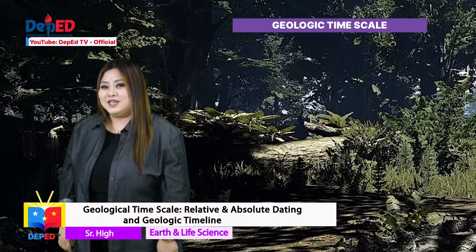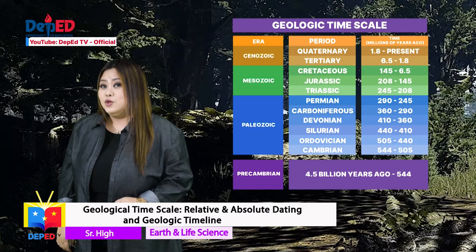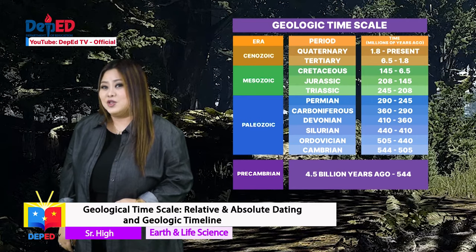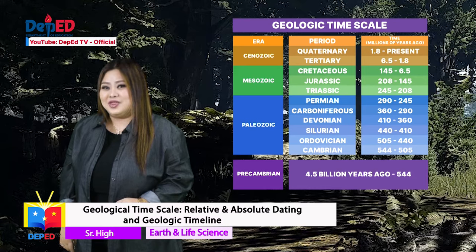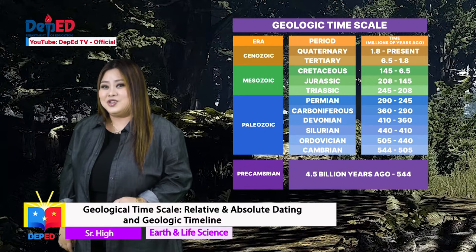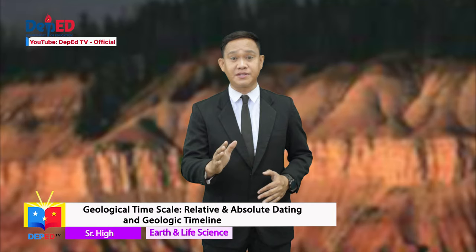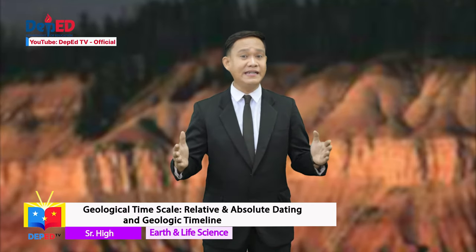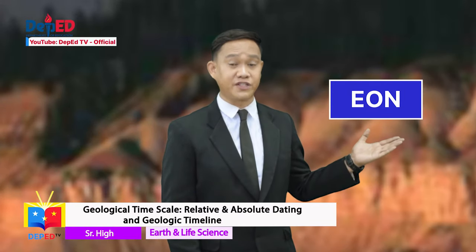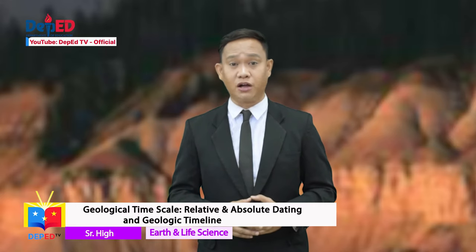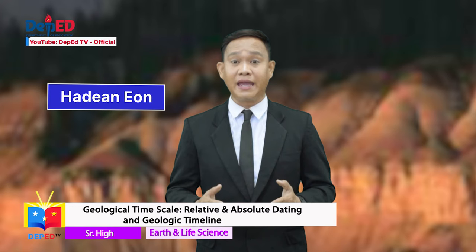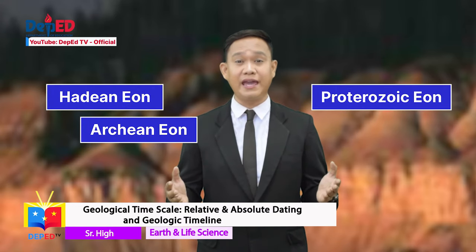The geologic timescale is divided into a series of time intervals. These timing intervals are different from that of a clock. They are divided according to the significant events in the history of the Earth, such as the mass extinction of a large population of fauna and flora. The table represents the division of geologic time in Earth's history separated into eons, periods, and epochs. The Earth's age, which is 4.6 billion years, is separated into different spans of time. Eons are the largest slices of time, ranging from half a billion to two billion years long. There are four eons in the geologic timescale: Hadean, Archean, Proterozoic, and Phanerozoic eons.